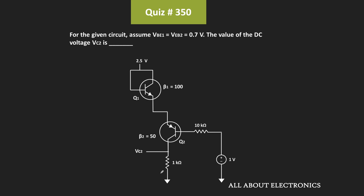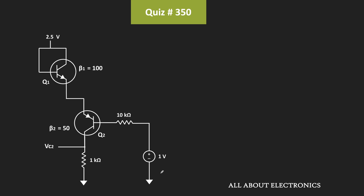So in this question, we have been given this transistor circuit, and in this circuit we have been asked to find the collector voltage VC2 across this second transistor. Here the NPN transistor is connected with the PNP transistor, and we have been given that VBE1 is equal to VEB2 is equal to 0.7V.